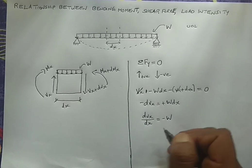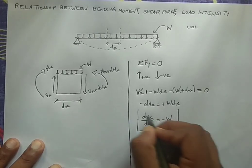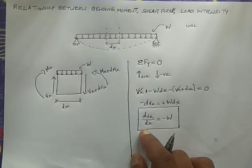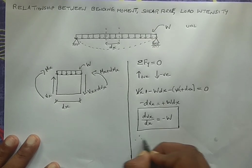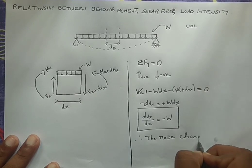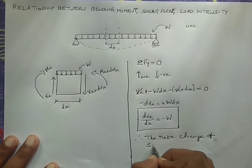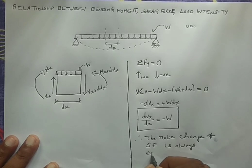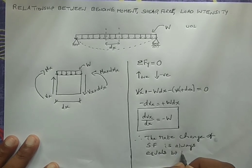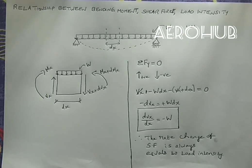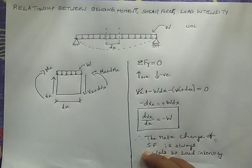Therefore, dV/dx = −W. This is our first relationship: the rate of change of shear force always equals the load intensity. This gives us the relationship between shear force and loading.